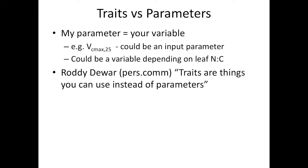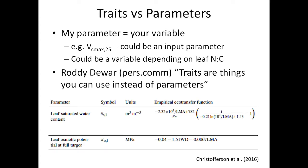Another definition came from Roddy, who said traits are things we can use instead of having to get parameters directly, because a lot of model parameters are complicated things you can't measure. The nice thing about traits is that they give us a way to get a handle on parameters. For example, Brad used leaf mass per area and wood density to derive model parameters like leaf saturated water content and leaf osmotic potential at full turgor — which are not so easy to measure directly.